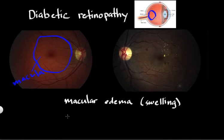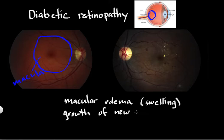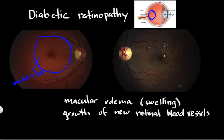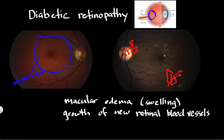The other complication that happens in more advanced forms of diabetes, as the disease progresses, is the growth of new retinal blood vessels. As the disease progresses and you get more and more damaged blood vessels, eventually the blood circulation to the retina becomes compromised. The eye tries to compensate for this by growing new blood vessels — some might start to grow along the optic nerve or in other areas to replace the existing damaged ones.